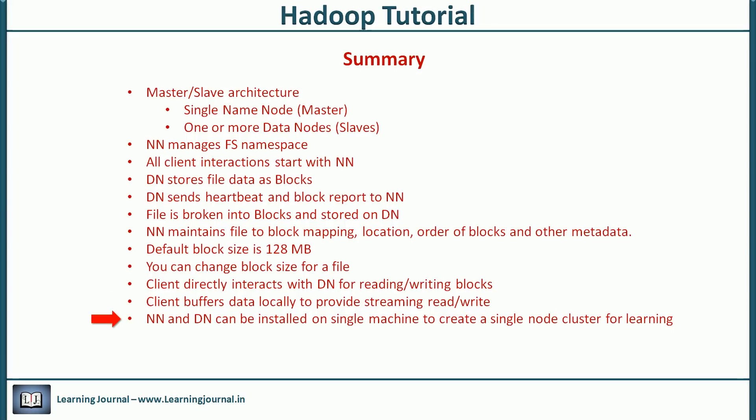The name node and data node are pieces of software. So at the minimum configuration, you can run both on the same machine and create a single node Hadoop cluster. But a typical deployment has a dedicated computer that runs only the name node software. Each of the other machine in the cluster runs one instance of data node software.